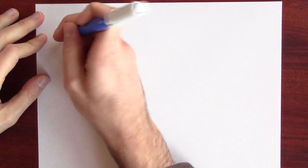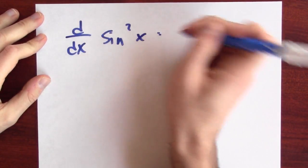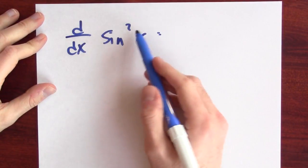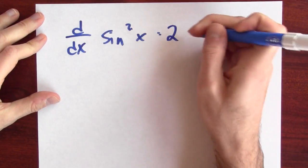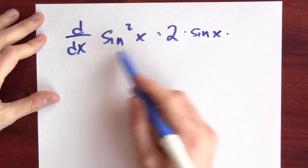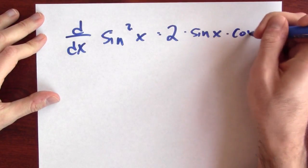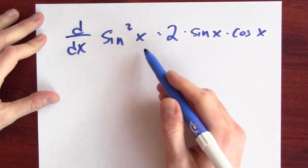With all that we've learned so far, it's super easy to differentiate sine squared x. It's the chain rule — the derivative of the outside function, which is the squaring function, gives 2 times the inside function, which is sine x, times the derivative of the inside, which is cosine x. So that's the derivative of sine squared x.